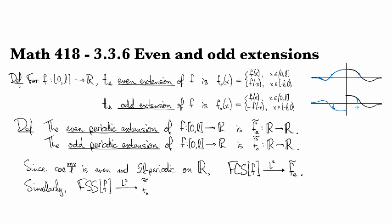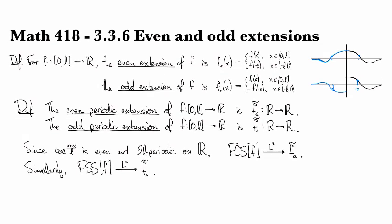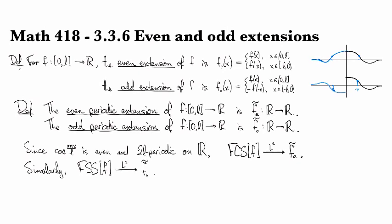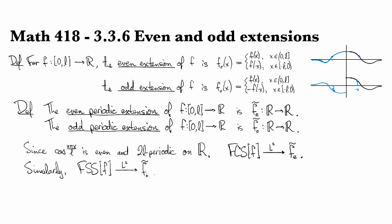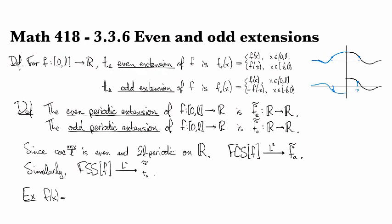And so, this accounts for some of the behavior that we saw when we looked at the Fourier cosine series and the Fourier sine series for the identity function, F of X equals X.